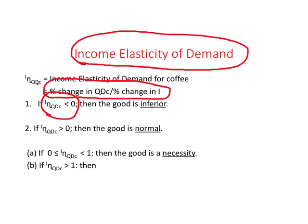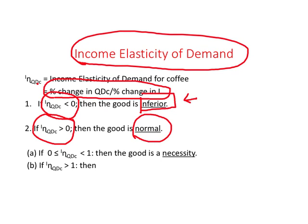If income elasticity of demand turns out to be negative, that means as income increases you tend to buy less of the good — that is the definition of an inferior good. If income elasticity of demand is positive, demand for the good increases as income increases, and in this case the good is called a normal good. Normal goods can be further subclassified.